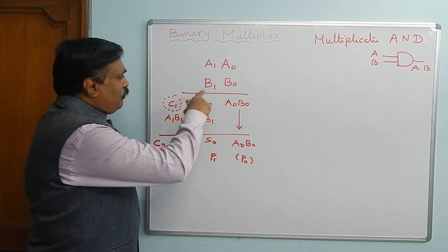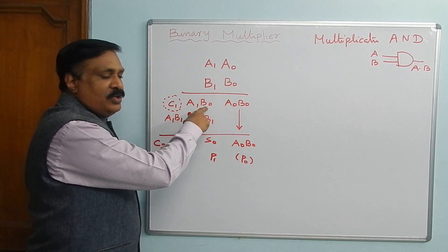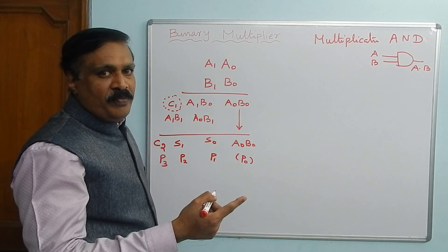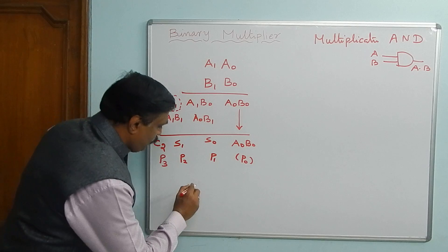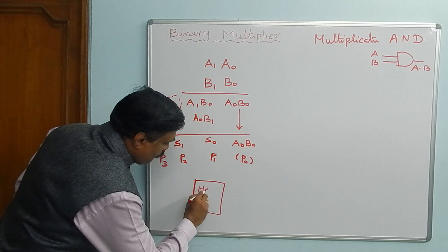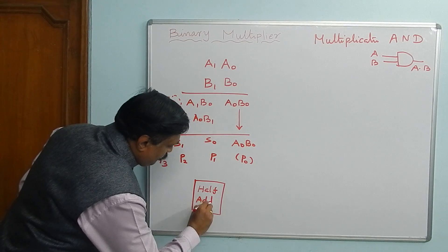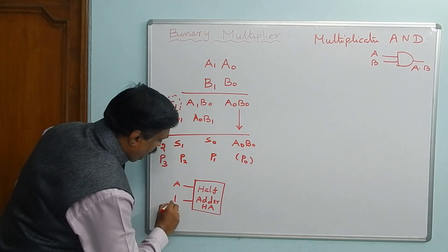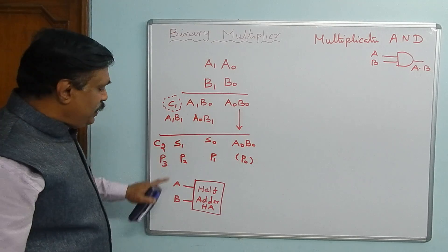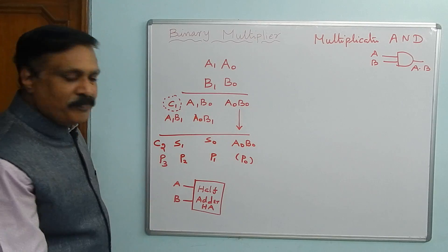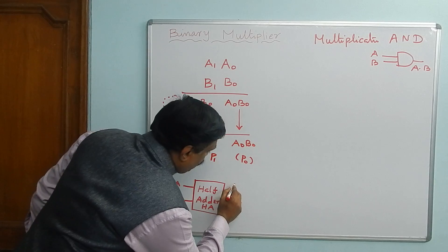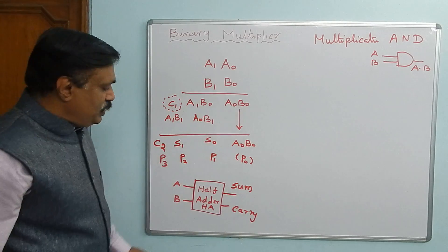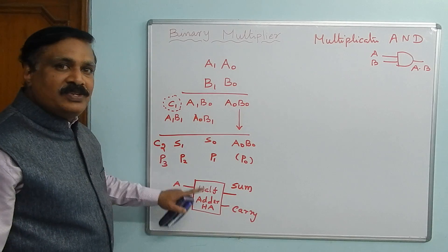Here you are adding two bits. For example, if it is 1 and 1, the result will be 1 and there is a carry — 1 plus 1 equals 10 in binary. That means we can use a half adder here. A half adder is a circuit that takes two bits at a time and gives two outputs: one is sum output and another is carry output.